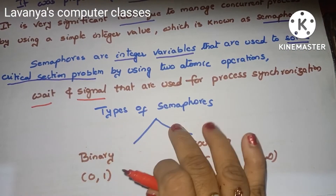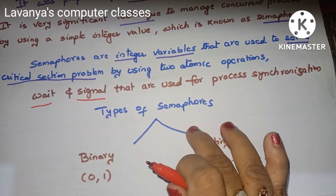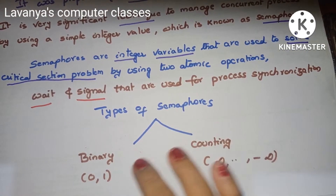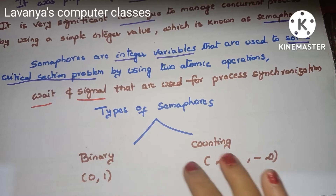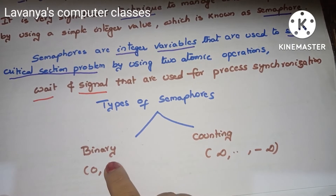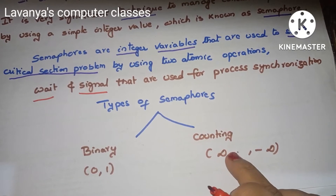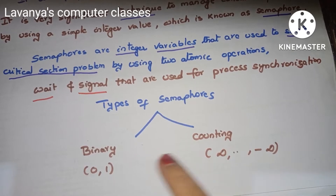We go for types of semaphores. There are two types: one is binary semaphore, and the second is counting semaphore.